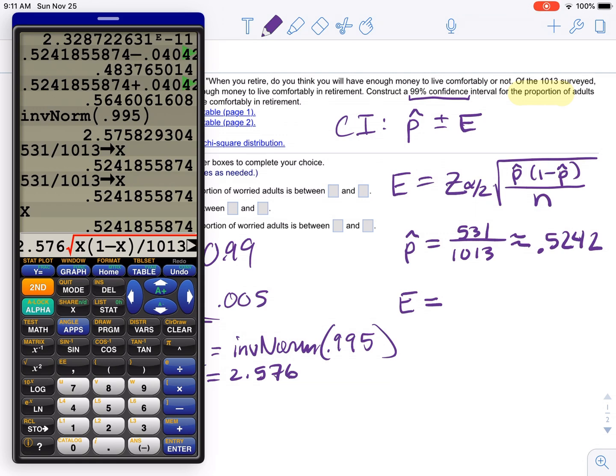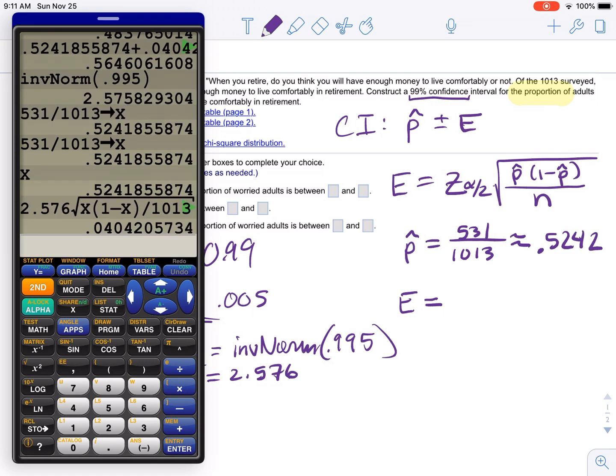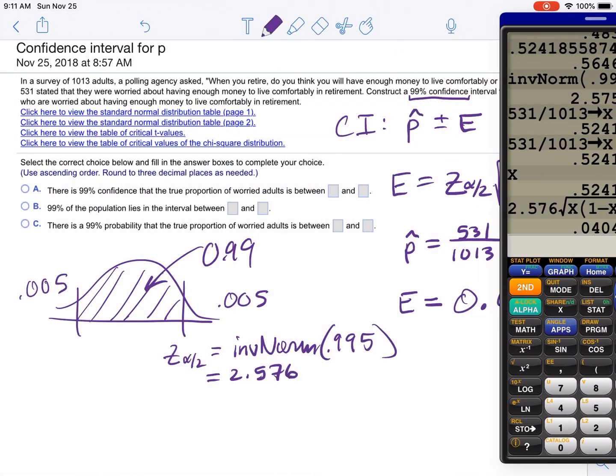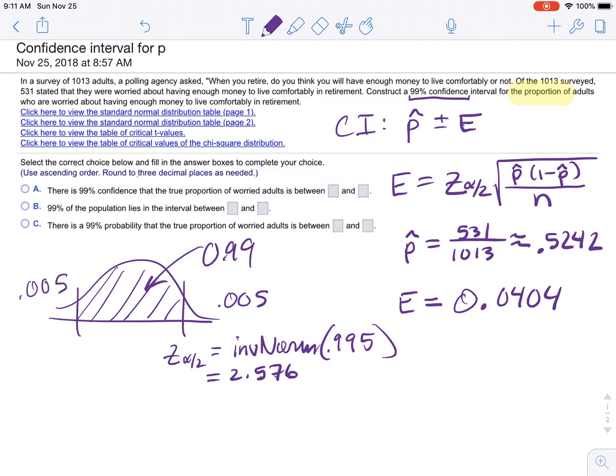So you see how it's kind of easy to use X instead of having to plug in a bunch of numbers. So we're going to get 0.0404. The question wants us to round to three decimal places. I did 4. And at the end...